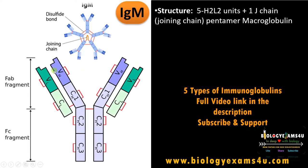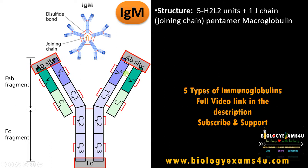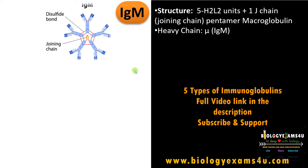Each monomer consists of two heavy chains and two light chains joined by disulfide bonds. The red-colored bonds shown are the disulfide bonds. The upper part is called the FAB fragment and contains the antigen-binding site, so each monomer has two antigen-binding sites. The lower part is called the Fc region, which is the constant region. The upper part has a highly hypervariable region responsible for the specificity of this immunoglobulin. The heavy chain is mu, which is why it is called IgM.